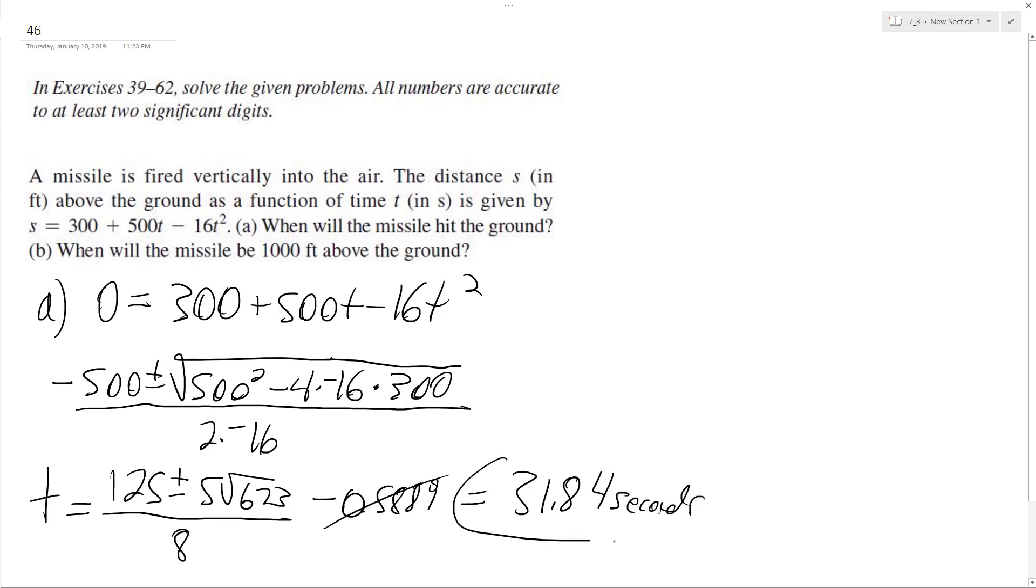Okay, that's part a. Part b is when the missile is a thousand feet above ground. Exact same setup, except instead of zero, we set it to a thousand.